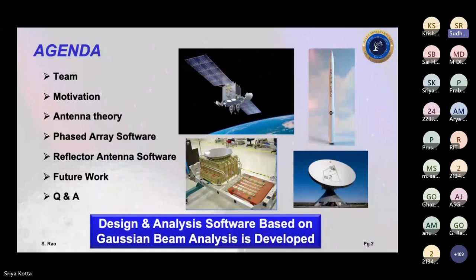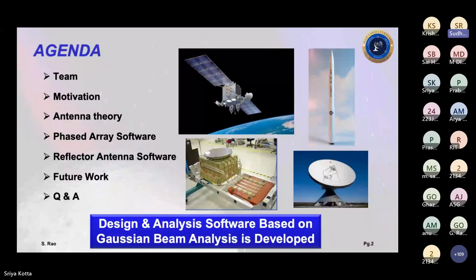I was talking to some engineers about how long it took to design the phased array. They said it took almost two years because they were using HFSS software — it's not a design software; it's iterative analysis. Every iteration takes so long. That's not useful when you're doing a proposal because you're not given much time — you have to give quick answers probably within a week or so. That's the idea behind developing the software.